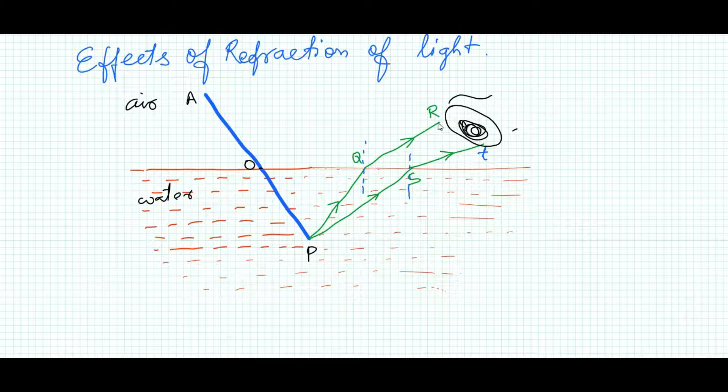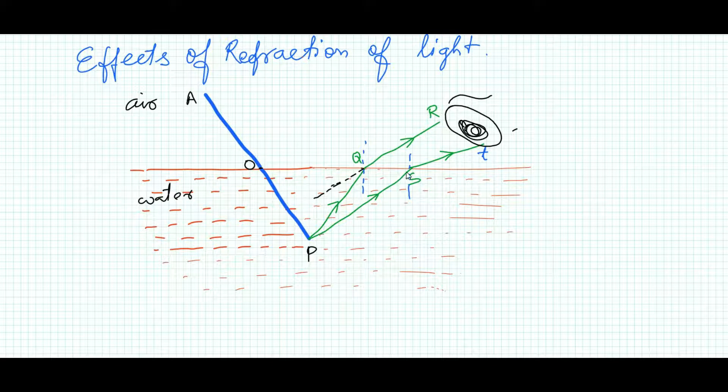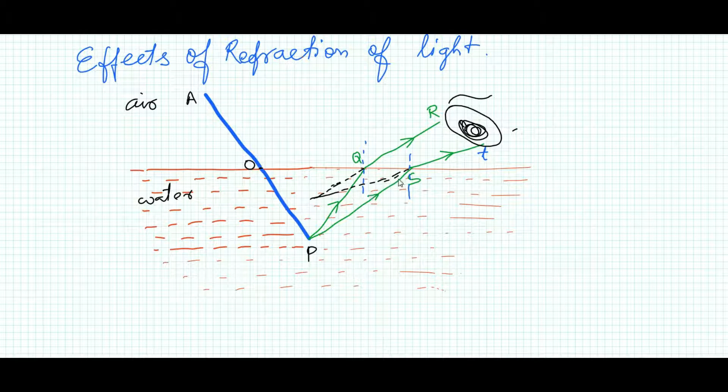So if we extend these two refracted rays RQ and TS in the backward direction like this, they will meet at point P′. So the stick will appear like this: OP′.